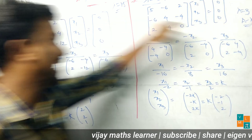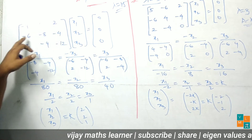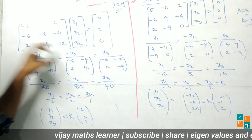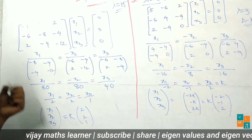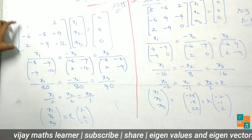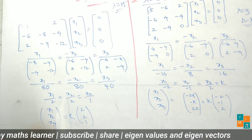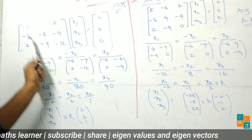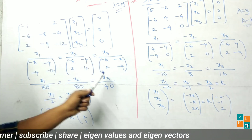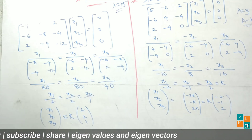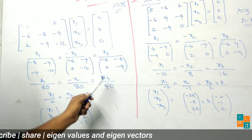Substituting lambda equal to 15 in matrix A minus lambda I gives: -7, -6, 2, -6, -8, -4, 2, -4, -12 times [x1, x2, x3] equals [0, 0, 0]. Using the cross-ratio method: x1 by sub-matrix (omit first column, first row) — entries -8, -4, -4, -12 — determinant is 80. Minus x2 by entries -6, -4, 2, -12 — determinant is 80. x3 by entries -6, -8, 2, -4 — determinant is 40.